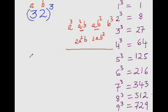Now let's try to cube 32 using this pattern. A cube would be 3 cube that is 27. Now, A square B, so 3 square is 9 and 9 times 2 is 18. Double of 18 is 36.